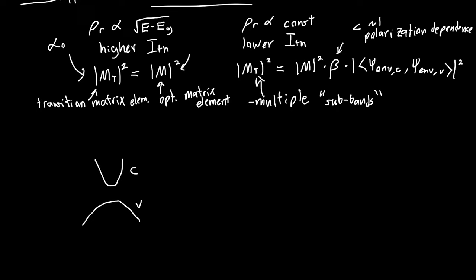But in quantum wells it turns out we're going to have a conduction band and a valence band, and then another conduction band and another valence band, which are going to depend on the energy levels of that quantum well, which we'll go over in future videos.